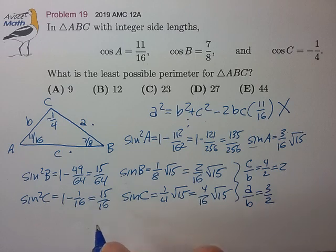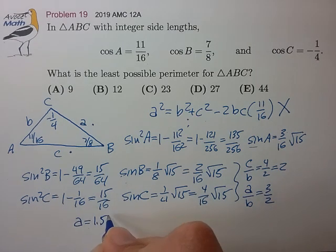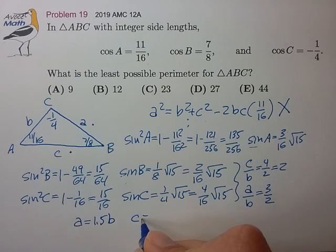So all totaled, we have that A is equal to 1.5B and C is equal to 2B.